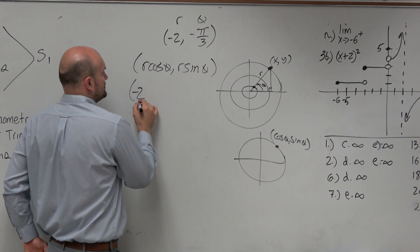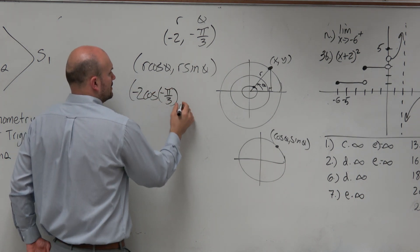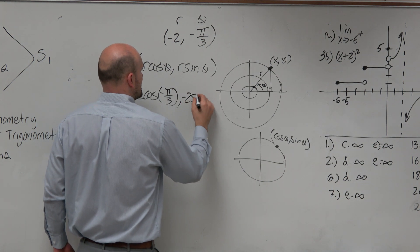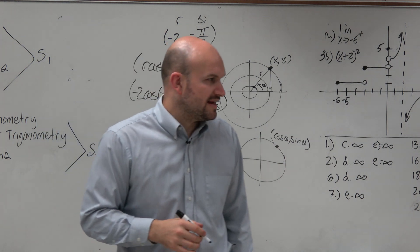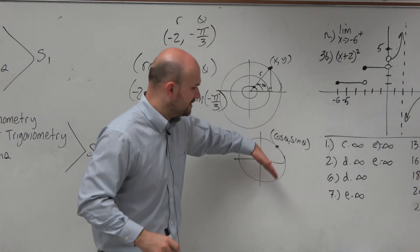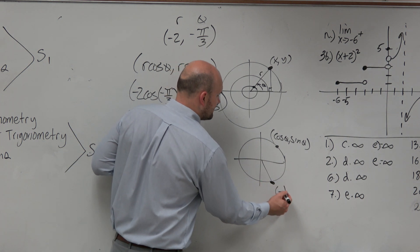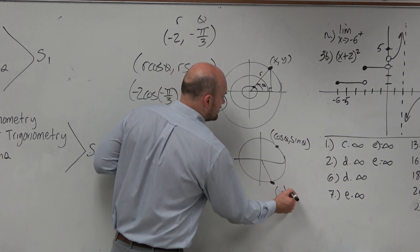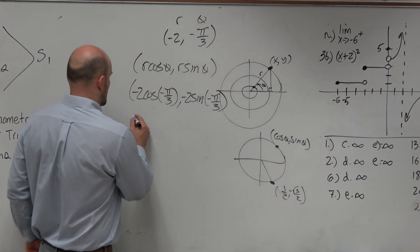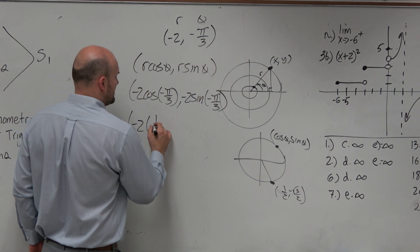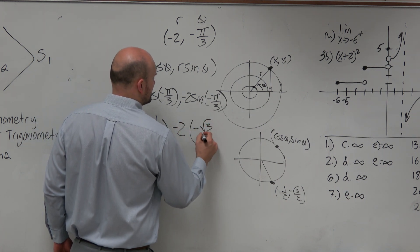In this case, it's going to be negative 2 times the cosine of negative pi over 3, comma negative 2 times the sine of negative pi over 3. The coordinate point of negative pi over 3 is down here — that's a positive one-half, negative square root of 3 over 2. So therefore, I have negative 2 times positive one-half, comma negative 2 times negative square root of 3 over 2.